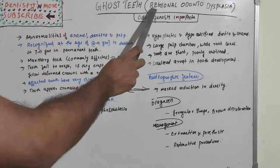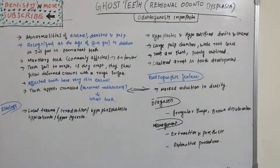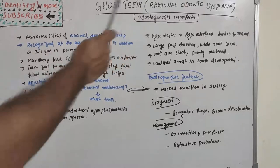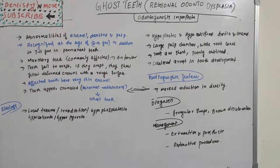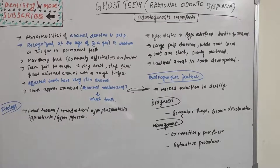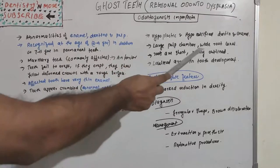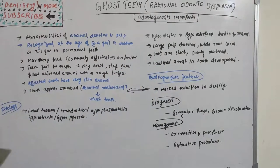The name itself gives a clue about the condition, as most diseases, syndromes, and cysts provide hints from the title. The ghost appearance arises from a large pulp chamber with very thin enamel and dentine. The roots are very short and poorly outlined, and there is a localized arrest in tooth development.